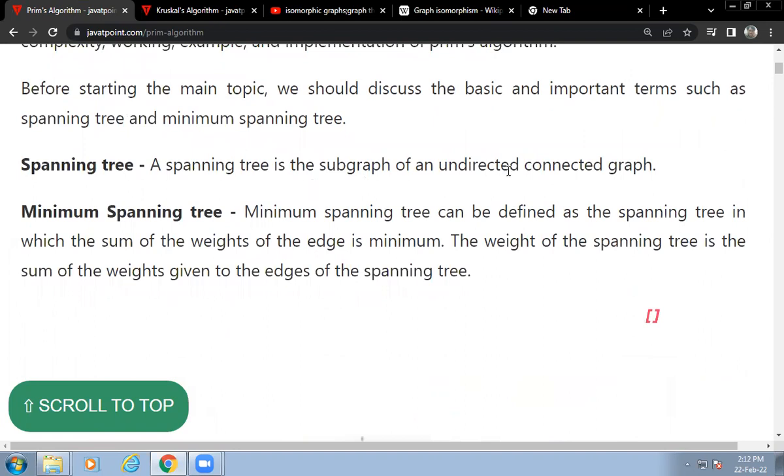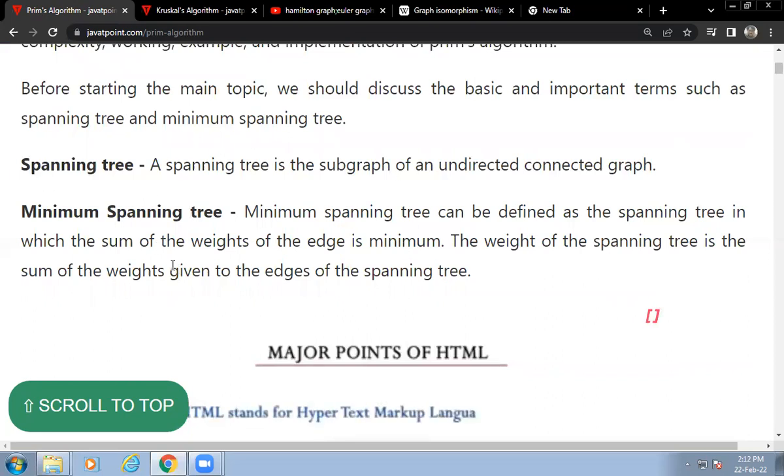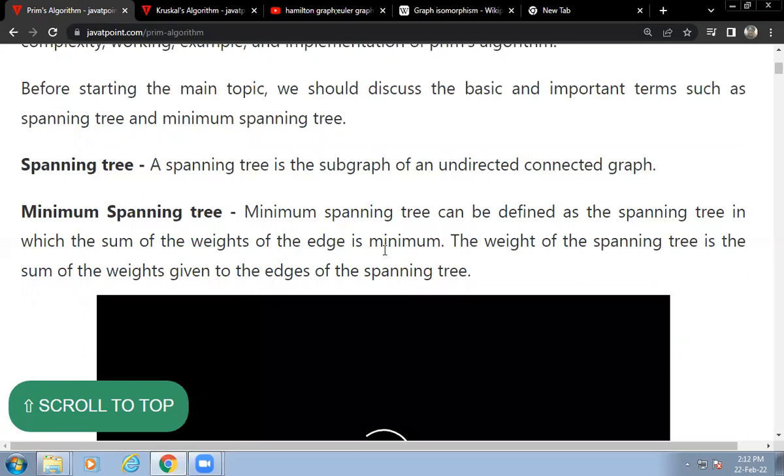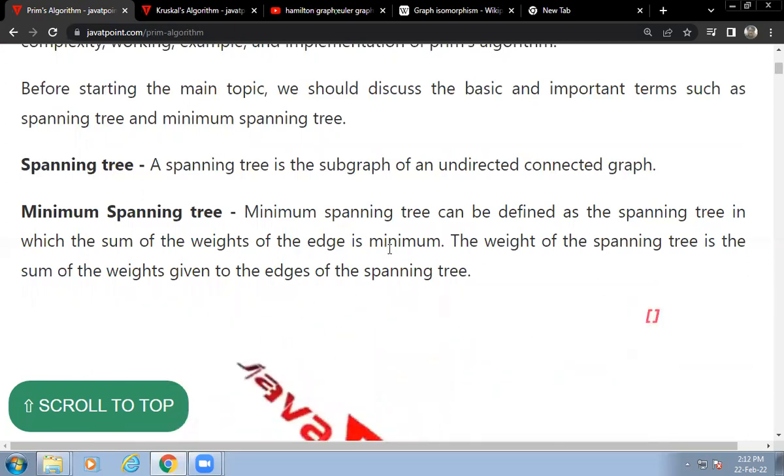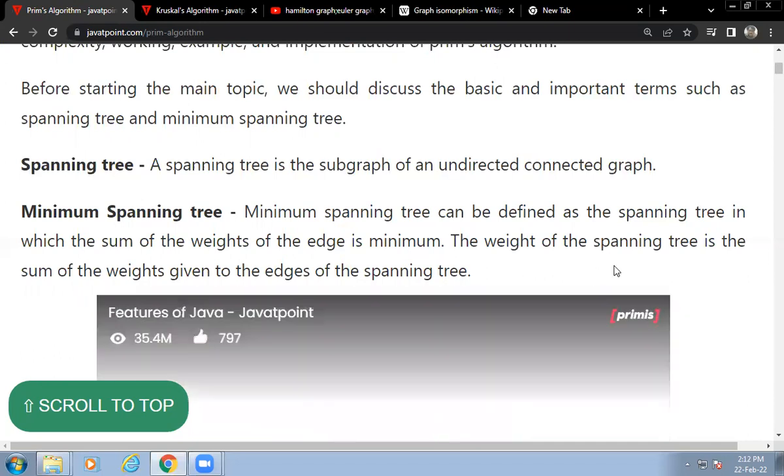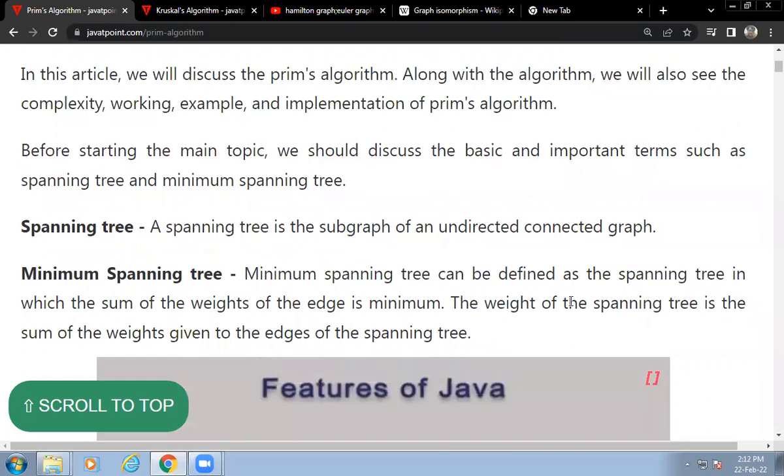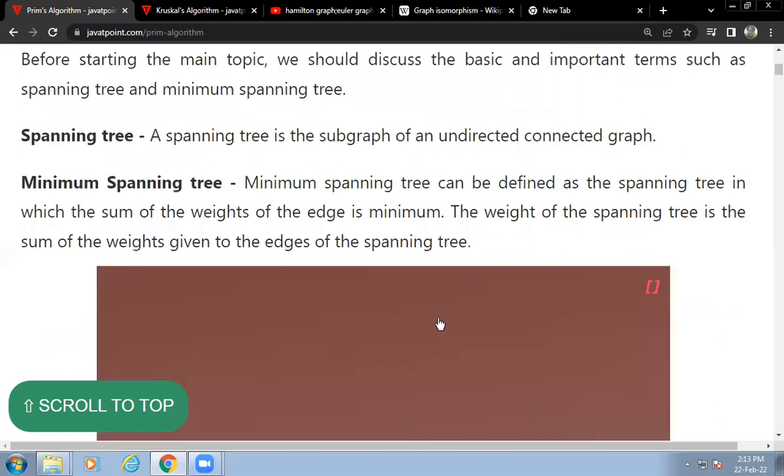A spanning tree is the subgraph of an undirected connected graph. Minimum spanning tree can be defined as the spanning tree in which the sum of weights of the edges is minimum. Each edge has some cost. The weight of the spanning tree is the sum of weights given to the edges of the spanning tree.